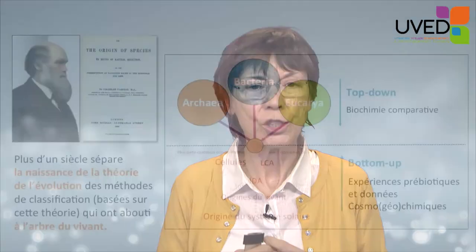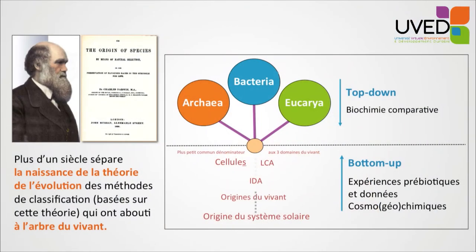This means we have a way to perform a gradualistic analysis, starting from recent times and going back to ancient times. This is exactly what Darwin did when he produced the theory of evolution in his book published in 1859, The Origin of Species. More than a century separates that theory from the laboratory methods we currently use, which are all based on his theory and led us to the tree of living beings divided into three main domains: archaea, bacteria, and eukarya.